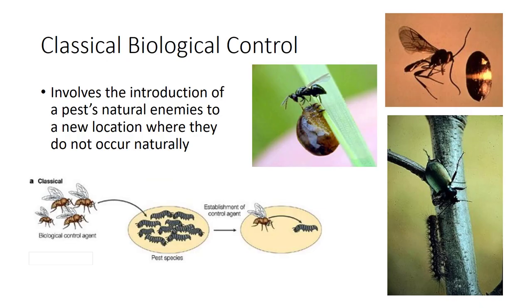Classical biological control involves the importation and establishment of natural enemies of exotic pests and is intended to achieve control of the target pest with little further assistance. This form of biological control is appropriate when insects that are introduced, usually accidentally, to areas outside of their range become pests mainly because of the absence of adapted or co-evolved natural enemies.